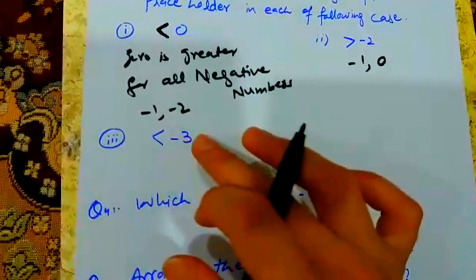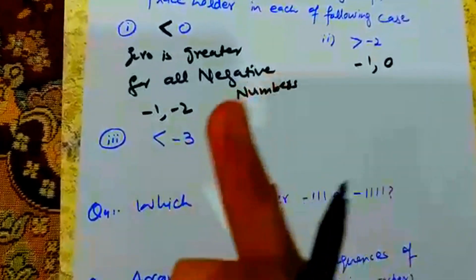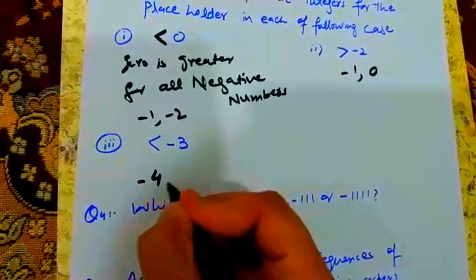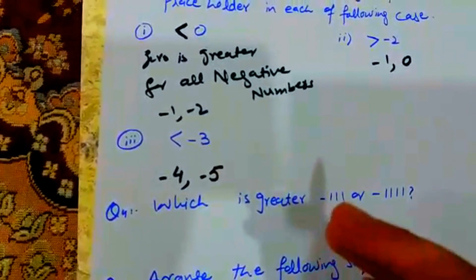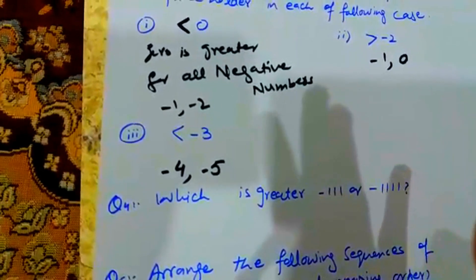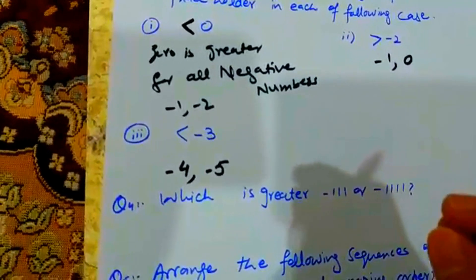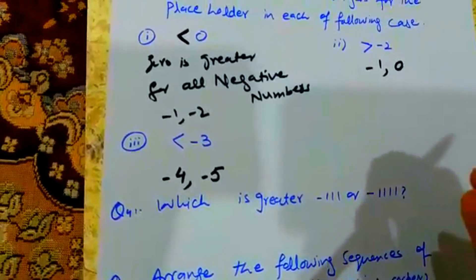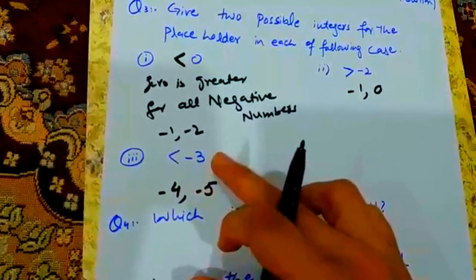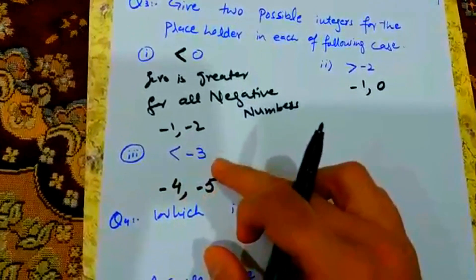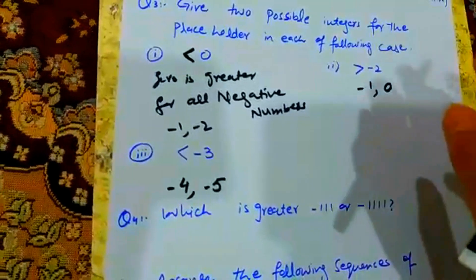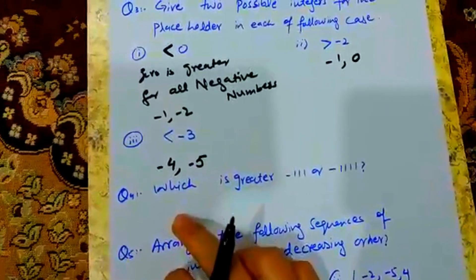Next, we have to find numbers greater than minus 3. When you have a negative sign, the bigger the number after the minus, the smaller the value. So minus 4 is smaller than minus 3, and minus 5 is also smaller than minus 3. So minus 4 and minus 5 satisfy this condition. These are the possible values.